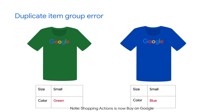In Merchant Center, duplicate errors can show up as duplicate variant or duplicate product. The diagnostics page in Merchant Center can be very helpful to troubleshoot these issues. Now let me show you how to fix this item group issue through Merchant Center.